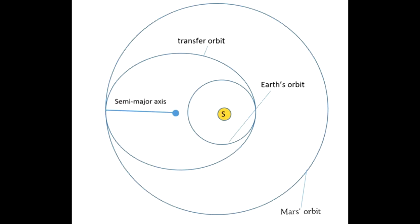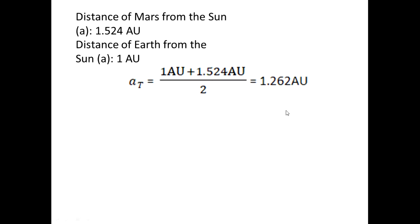To find the angle, we first have to find the time it takes for our spacecraft to get from Earth to Mars through the elliptical orbit. So first we have to find the semi-major axis, which is the distance from the center of the elliptical orbit to the side. In order to do that, I added the distance of Earth from the Sun and the distance of Mars from the Sun together — that's 1 plus 1.524 divided by 2 — and that gave me 1.262 astronomical units.